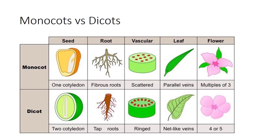In conclusion, knowledge of basic plant anatomy including vegetative leaves, stems, and roots, and reproductive flowers and fruits, together with understanding the plant's life cycle is important in plant classification, as well as in maximizing the plant's potential uses.